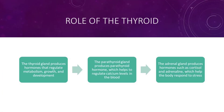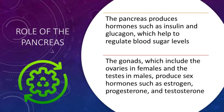Role of the thyroid. The thyroid gland produces hormones that regulate metabolism, growth, and development. The parathyroid gland produces parathyroid hormone, which helps to regulate calcium levels in the blood. The adrenal gland produces hormones such as cortisol and adrenaline, which help the body respond to stress.